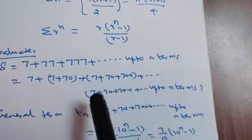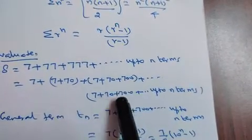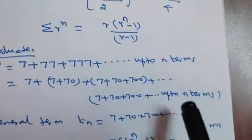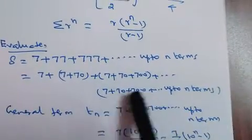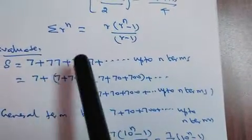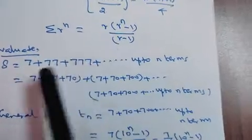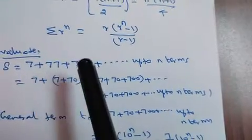Then the n terms is 7 plus 70 plus 700 plus and so on up to n terms. Then the general term, what is tn in the series? One term is t1, t2. T1 is 7, t2 is 7, t3 is 7.